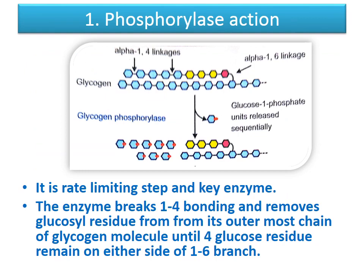Now we come to the first step of glycogenolysis: phosphorylase action. The glycogen molecule is highly branched. Phosphorylase enzyme acts on the 1,4 bonds and removes glucose residues in sequence from the outermost chain until only 4 glucose residues remain. The removed glucose units are released in the form of glucose-1-phosphate.